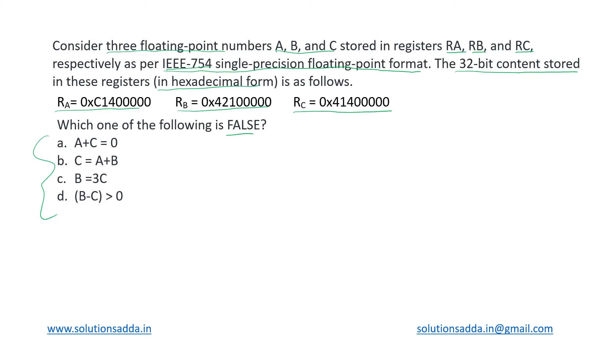We will write them in their expanded form. For this one, C14, C is 12, so 1100, then 1 in four bits is 0001, then 4 is 0100, and then all are zeros. So this is our number A.